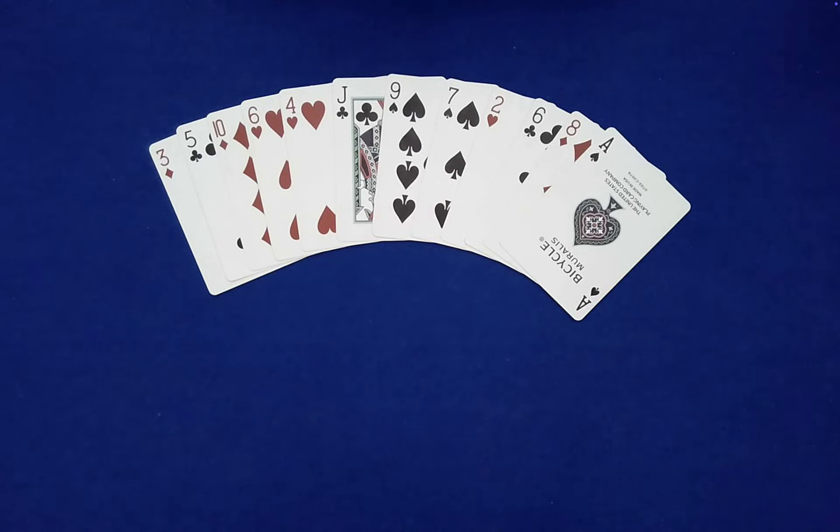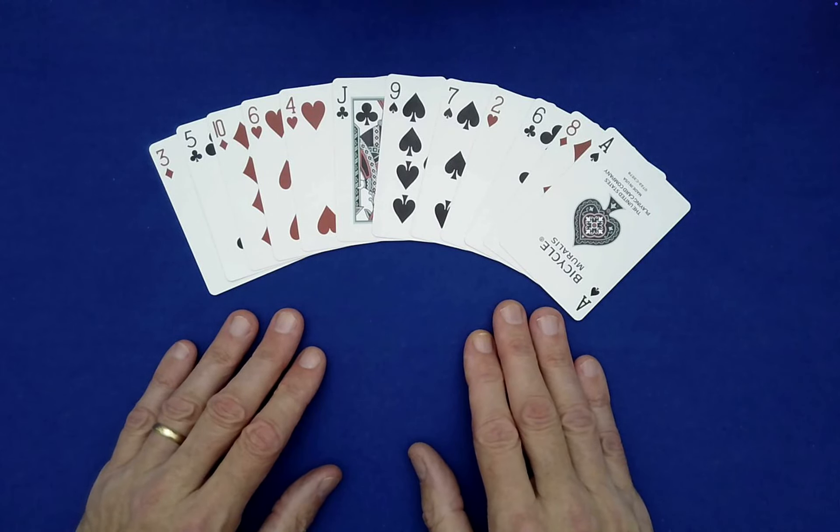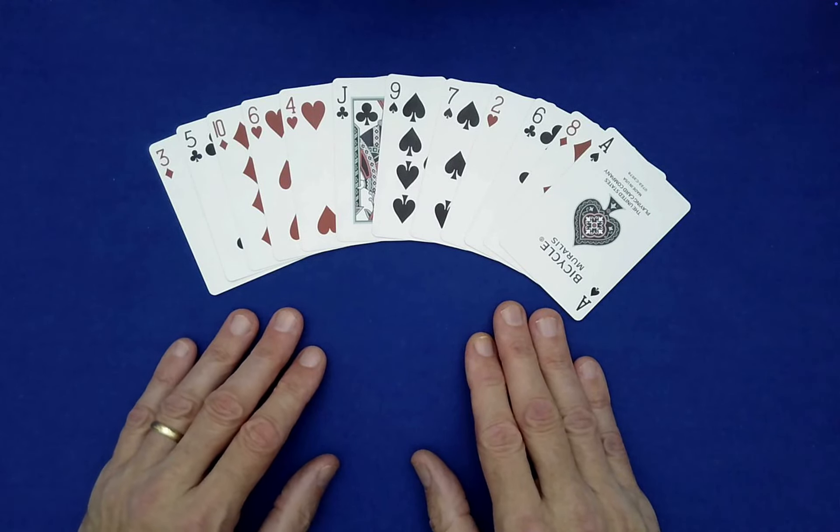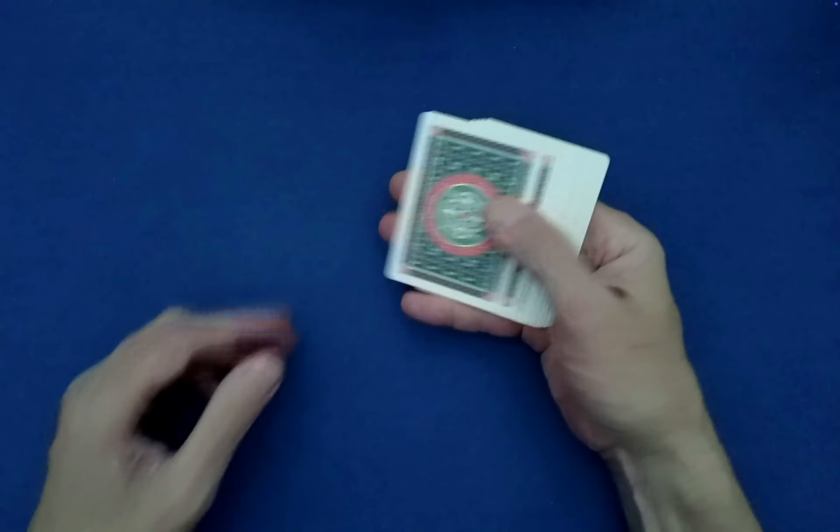Okay, I call this 12s All Around, and as you can see I have 12 cards on the table here with a good selection of card values, suits, and colors. Let's go ahead and gather these now.